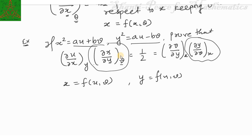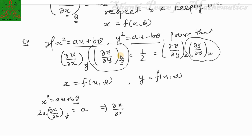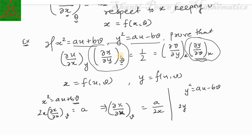From x² = au + bv, taking the partial derivative with respect to u keeping v constant: 2x · (∂x/∂u)_v = a, so (∂x/∂u)_v = a/(2x). From y² = au − bv, taking the partial derivative with respect to v keeping u constant: 2y · (∂y/∂v)_u = −b, so (∂y/∂v)_u = −b/(2y).